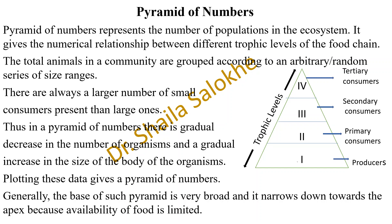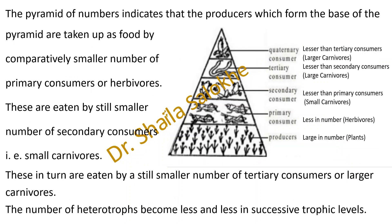In the diagram, you can see the producers are at the base and the different trophic levels are represented by primary consumers, secondary consumers, and tertiary consumers. Generally, the base of such pyramids is very broad and it narrows down towards the apex because of limited availability of food. The pyramid of numbers indicates that the producers are taken up as food by a comparatively smaller number of primary consumers — that is herbivores. The number of heterotrophs becomes less and less in successive trophic levels.